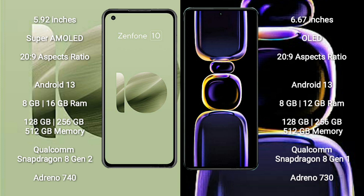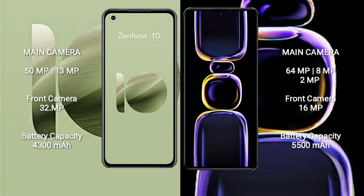Asus Zenfone 10 features the Qualcomm Snapdragon 8 Gen 2 processor with Adreno 740 GPU. Redmi K16 comes with 8GB or 12GB RAM and 128GB, 256GB, or 512GB internal storage, with a Qualcomm Snapdragon 8 Gen 1 processor and Adreno 730 GPU.